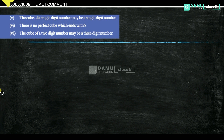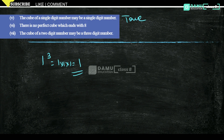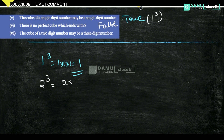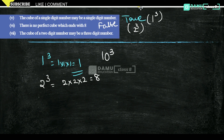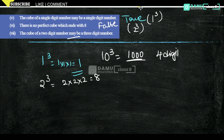Fifth: the cube of a single digit number may be a single digit number — true. For example, 1³ = 1, which is a single digit number. Sixth: there is no perfect cube which ends with 8 — false, because 2³ = 8. Seventh: the cube of a 2-digit number may be a 3-digit number — false. The smallest 2-digit number is 10, and 10³ = 1000, which is a 4-digit number.